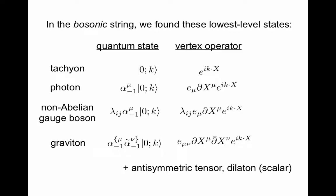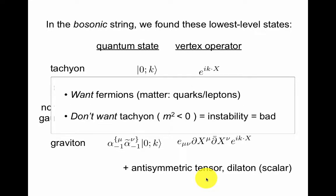In the bosonic string we found these lowest level states. Quantum state for the tachyon looked like this, and its vertex operator was that. The photon this, with this vertex operator and so on. The non-abelian gauge bosons and the graviton. We also had some other states that we weren't quite sure necessarily what they were, but what we're sure about is we need some matter. We don't have any spacetime fermions at this point, and we sure don't want the tachyon, which is bad in the bosonic string.